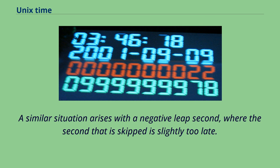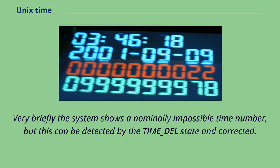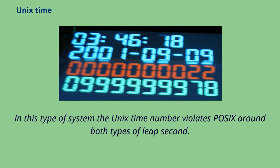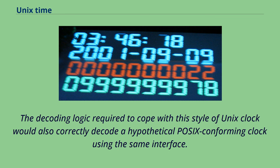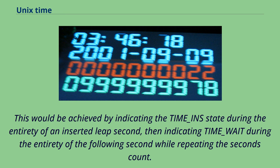A similar situation arises with the negative leap second, where the second that is skipped is slightly too late. Very briefly the system shows a nominally impossible time number, but this can be detected by the TIME_DEL state and corrected. In this type of system the Unix time number violates POSIX around both types of leap second. Collecting the leap second state variable along with the time number allows for unambiguous decoding, so the correct POSIX time number can be generated if desired, or the full time can be stored in a more suitable format.